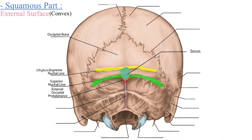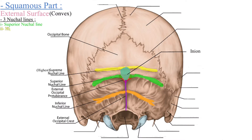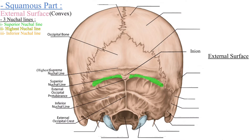Two other lines run superior to the superior nuchal line; these are faint and sometimes difficult to observe and are called the highest nuchal line. A thick bony ridge extends from the inion to the posterior margin of the foramen magnum in the midline, called the external occipital crest. From the midway of the external occipital crest, two lines run from medial to lateral side and are called the inferior nuchal lines.